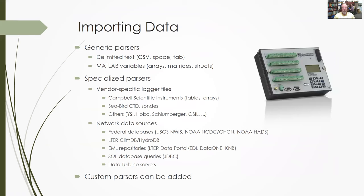The most important thing people grapple with when using data processing software is how to get data into it. There's a large suite of import filters pre-configured to pull data directly into the software — generic parsers for any delimited text file, as well as native MATLAB variables. Importantly, there are specialized parsers for common data files including Campbell data logger files, Seabird instruments for CTD temperature-depth profilers and mooring sensors, YSI, Hobo, and Schlumberger. We have a large number of vendor-specific import filters that are ready to go to automate pulling in data from those sources.